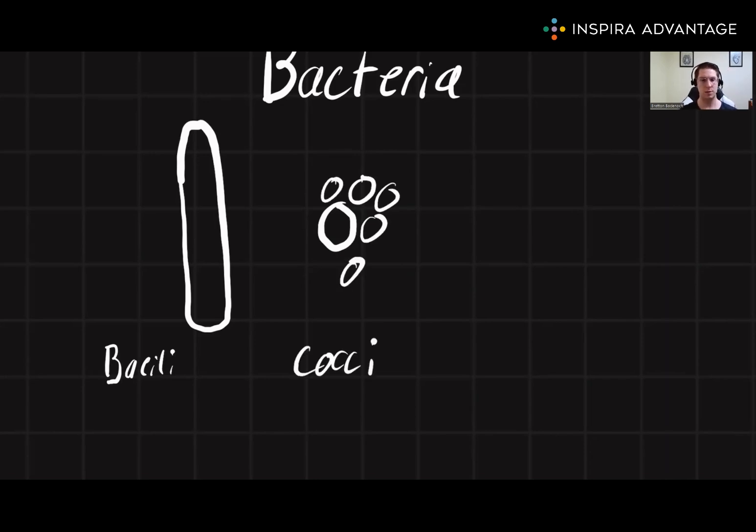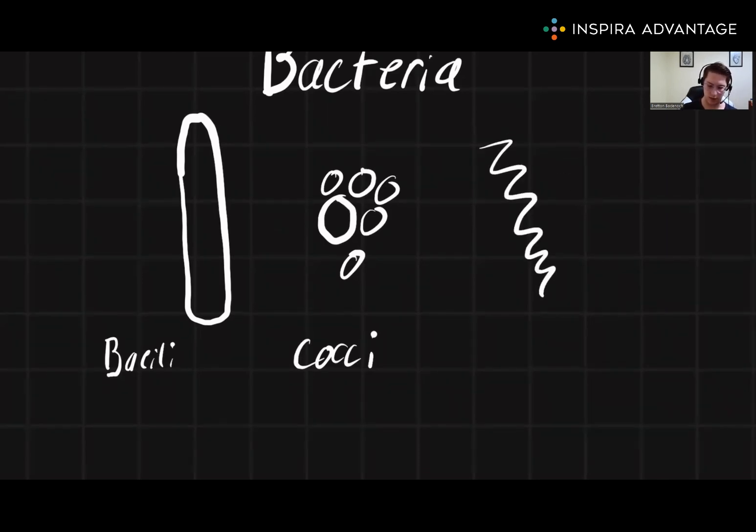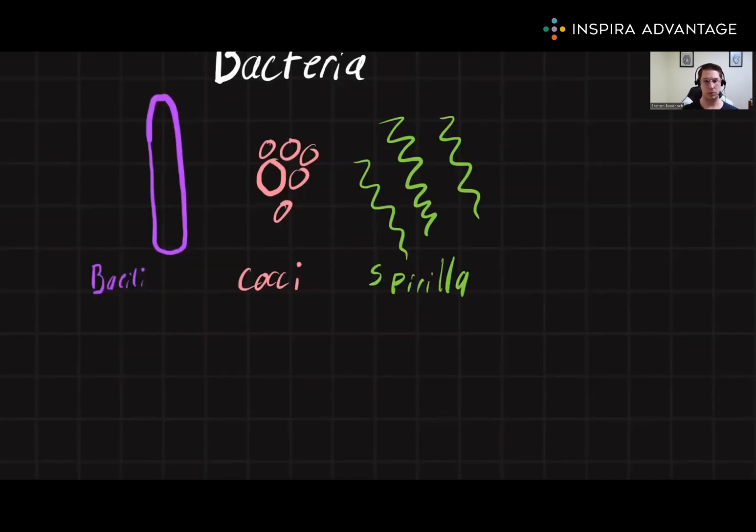The final type you need to know are called spirilla, which as their name suggests, they look like little spirals, or when I draw them, it looks like a saturated fatty acid. I'll recolor those to make them look pretty.